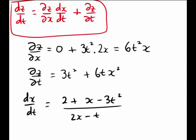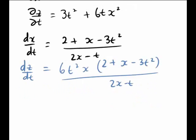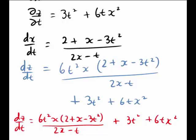Recall that this was the chain rule we constructed at the start — we've now found each of those pieces of information. The final step is to substitute these three parts into the equation, which will then give us our answer for dz/dt. So dz/dt equals ∂z/∂x, which was 6t squared x, multiplied by dx/dt, which was (2 plus x minus 3t squared) divided by (2x minus t). We then add on the partial derivative of z with respect to t, which was 3t squared plus 6t x squared. That is how we used the multivariate chain rule to find dz/dt in this case.